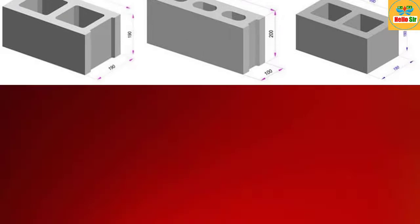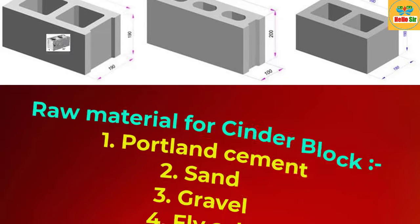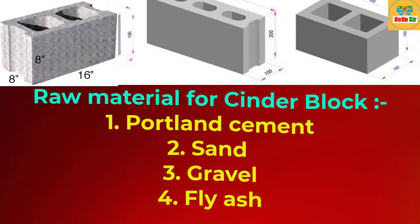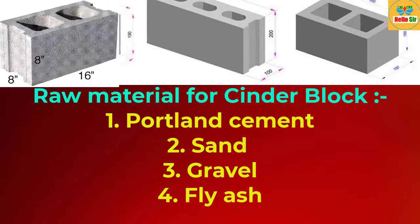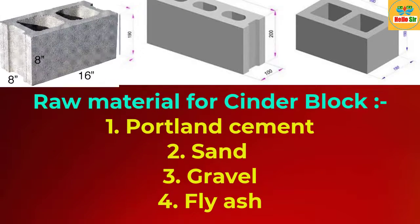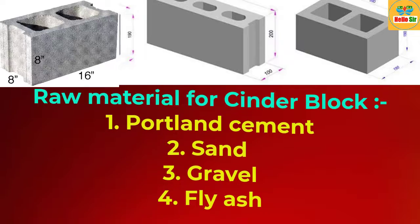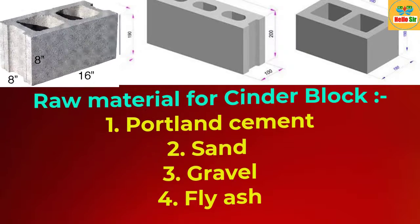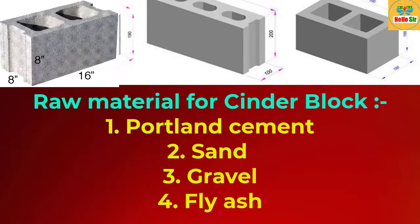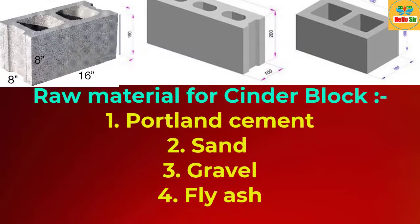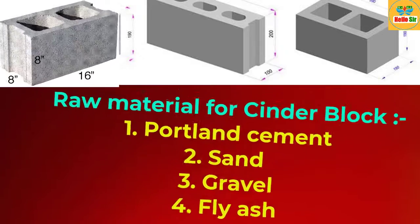The concrete commonly used to make concrete blocks is a mixture of powder, Portland cement, water, sand, and gravel. If you use fly ash in place of an aggregate, that is known as a cinder block.